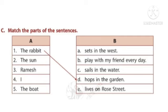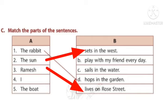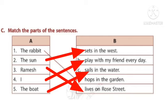The rabbit — hops in the garden. The sun — sets in the west. Ramesh — lives on Ross Street. I — play with my friend every day. The boat — sails in the water.